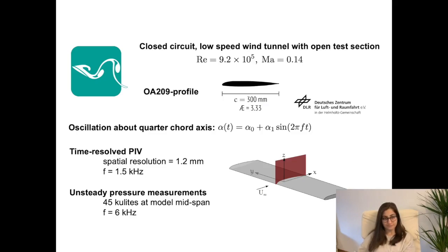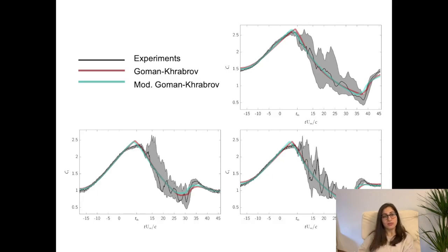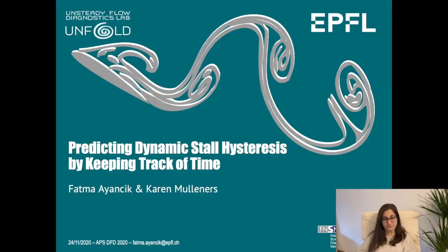Wow, that's nice and neat. How well does your model predict the experiments? So this is the exciting part. If we use these new constants in the Goman-Khrabrov model, we can see that the modified Goman-Khrabrov predicts the dynamic stall as good as the original model with physical time scales instead of the empirical ones. And also, we can use this model right now without changing these time scales for different types of airfoils.